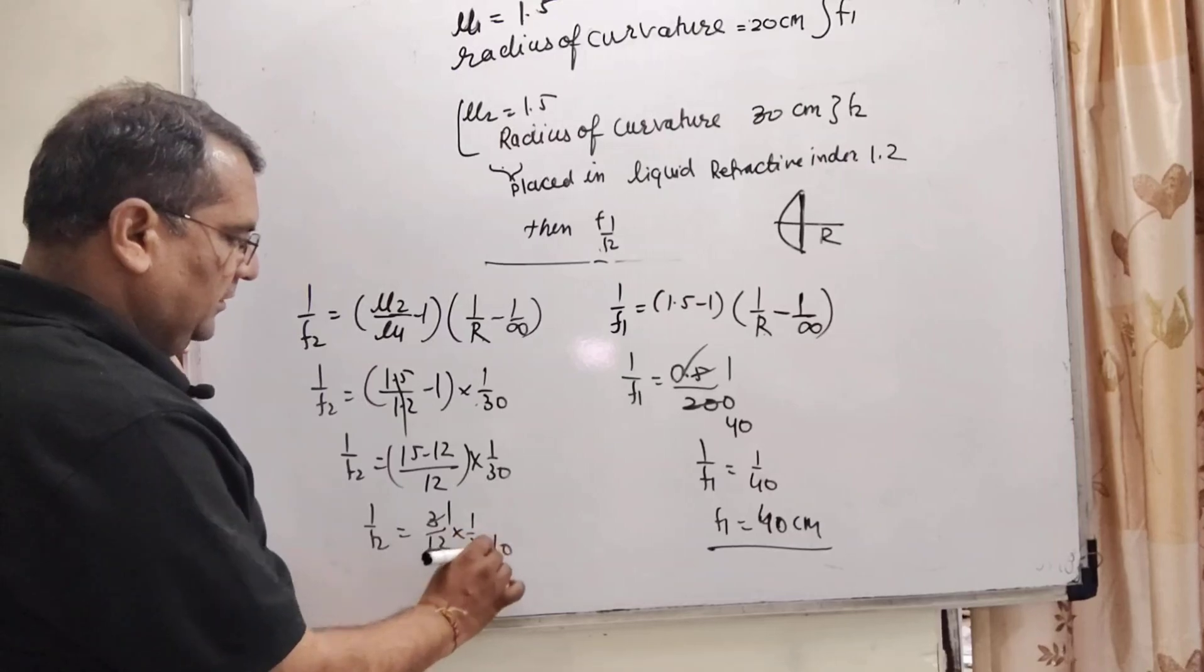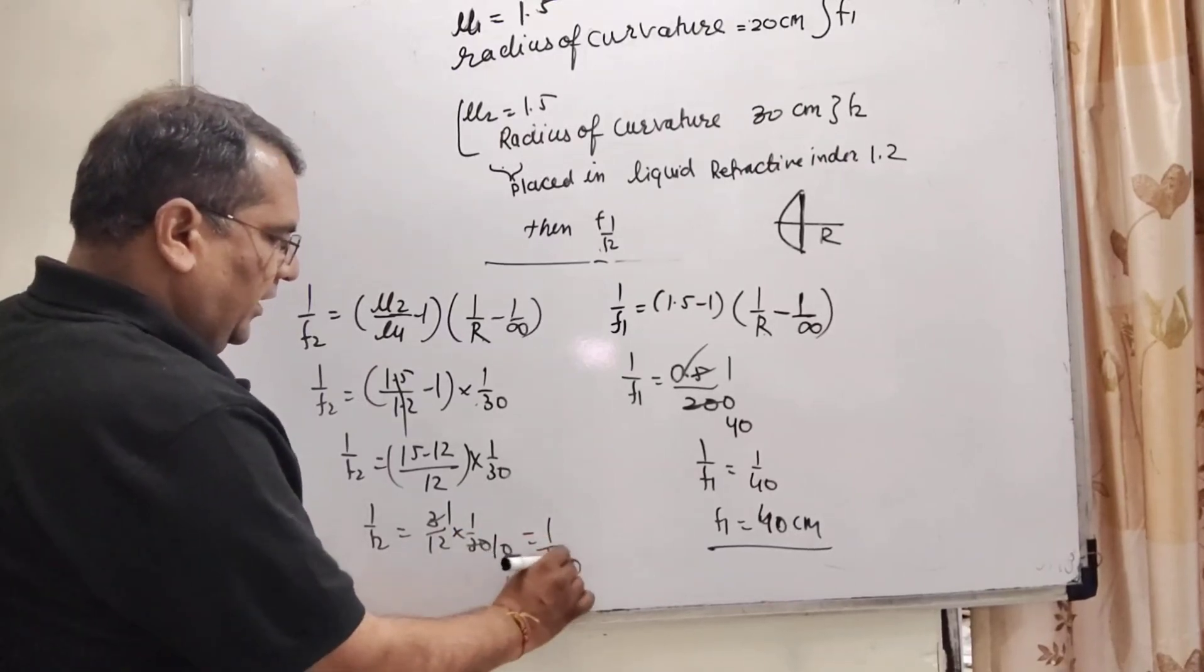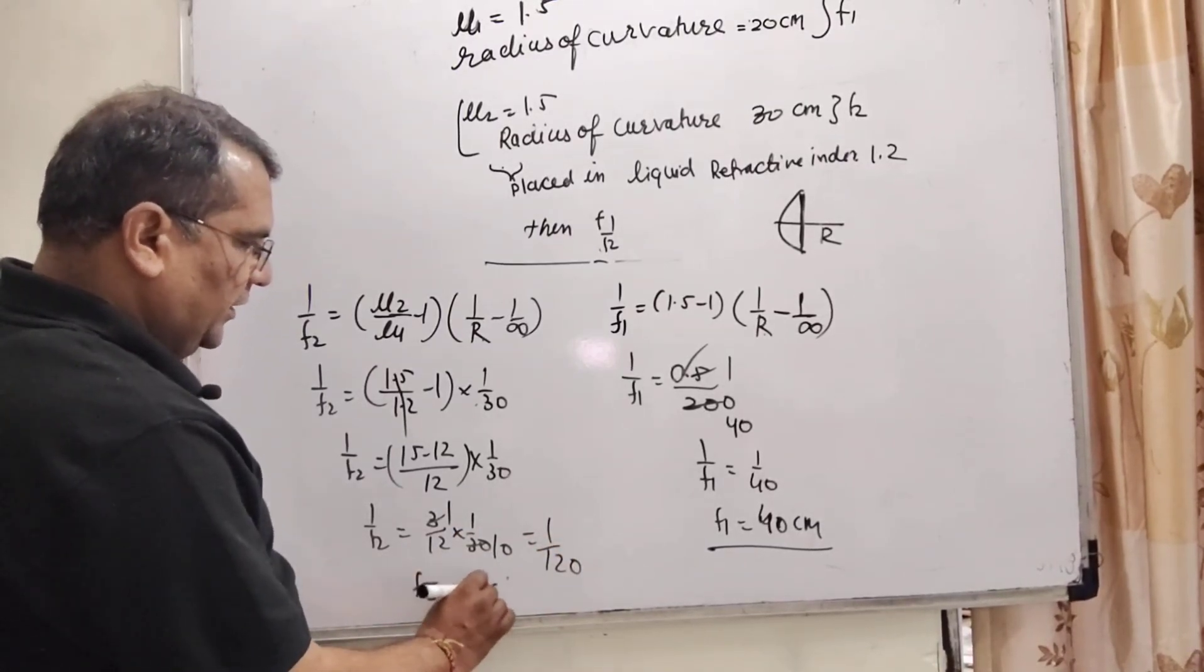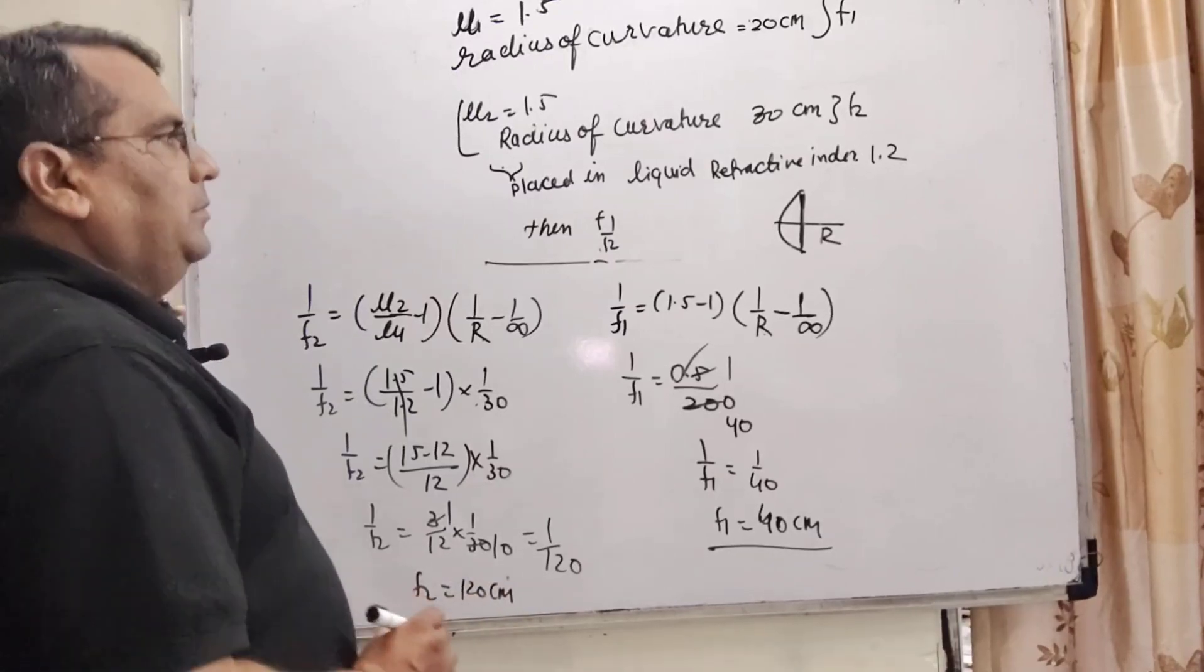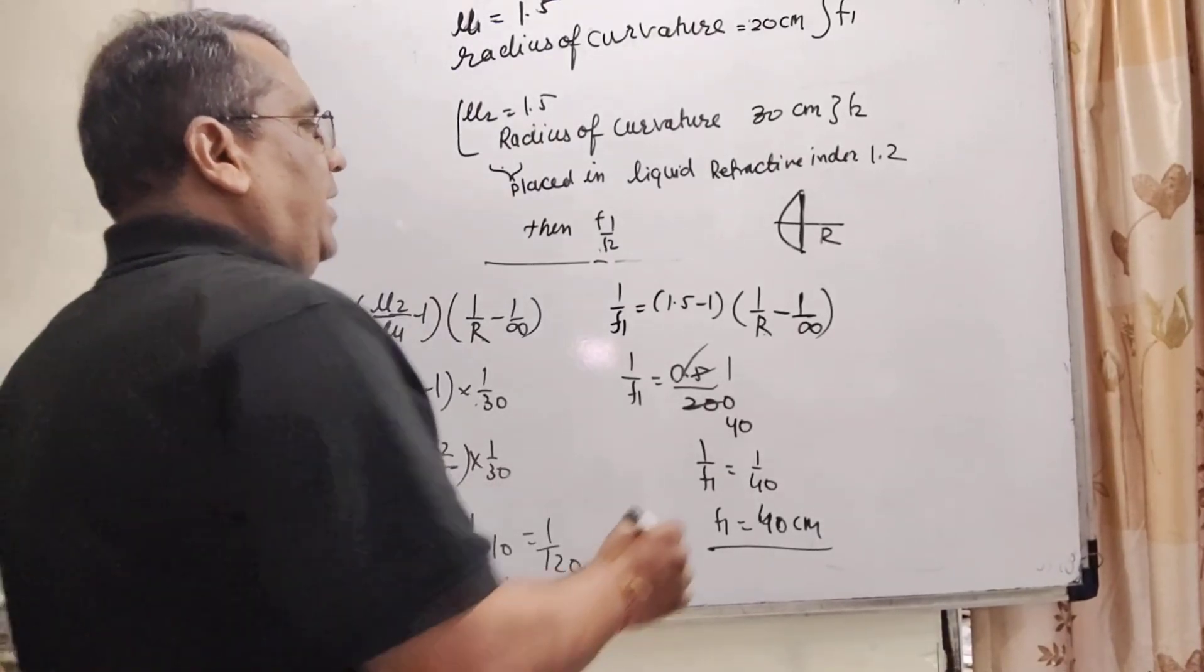3 times 1 is 3, 3 times 10 is 30. 1 by 120 means f2 equal to 120 cm.